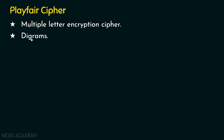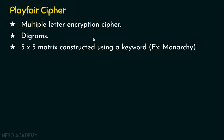Playfair follows the digrams approach, where plain text letters are split into digrams. Any encryption technique requires a key, and Playfair Cipher uses a keyword as the key. For example, Monarchy is the key taken here. This keyword can be any English word or sentence. We are going to use a 5×5 matrix, and this matrix will be constructed using the keyword.